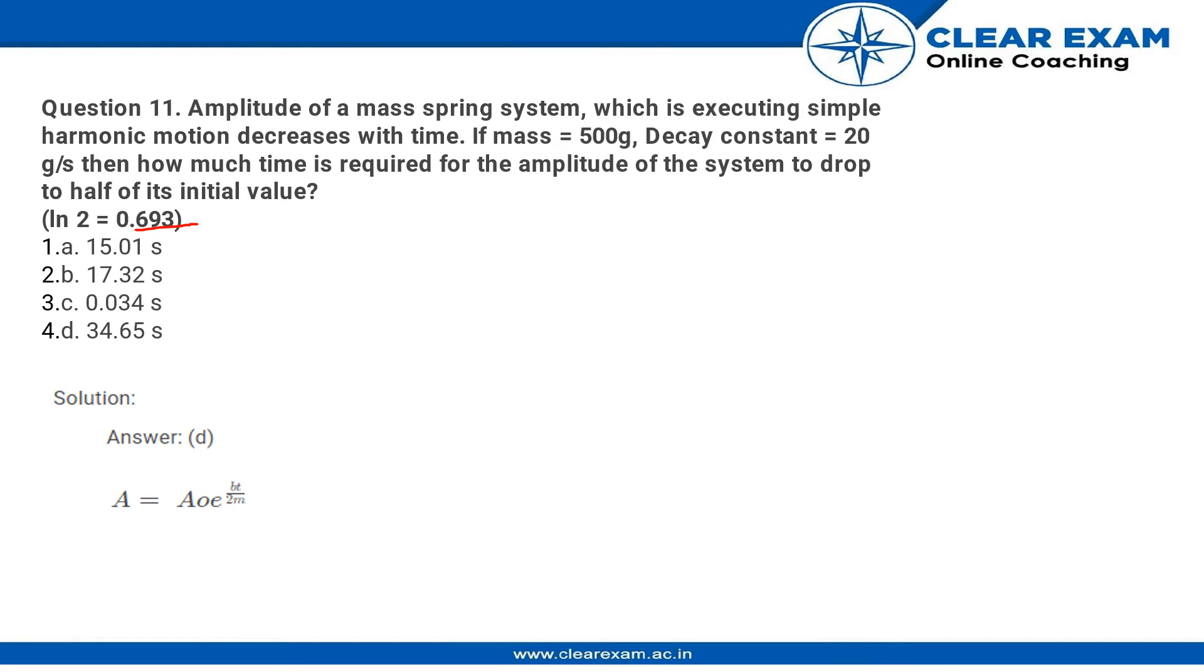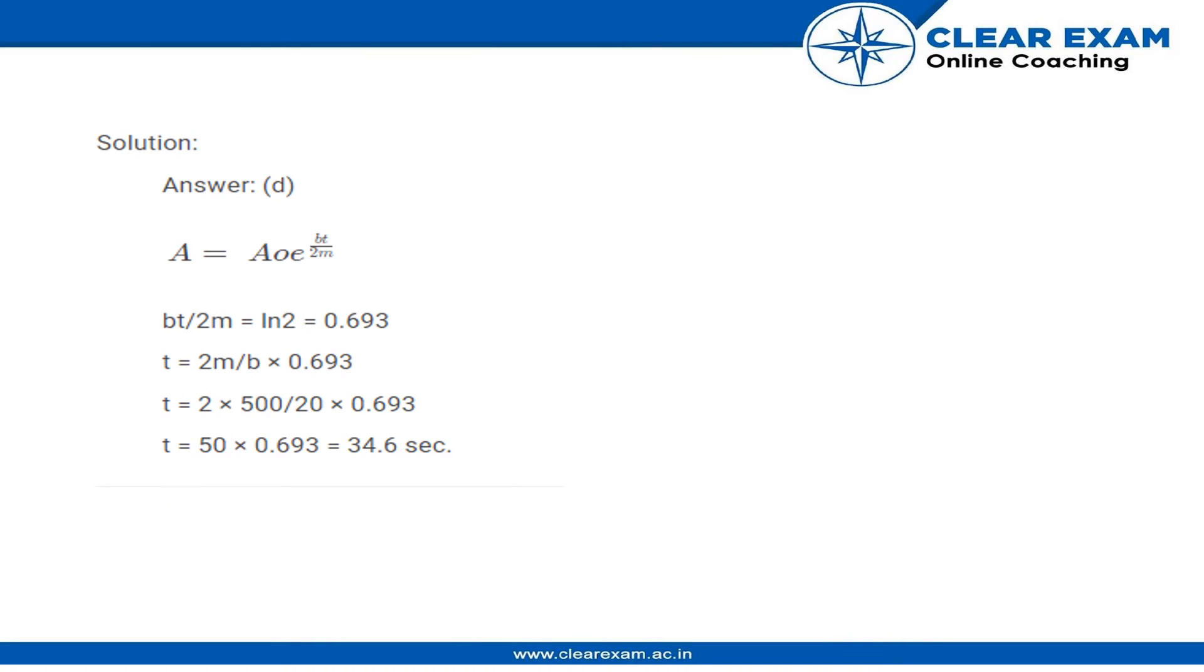So over here we are going to put in the values. What we do is we take ln on both sides, and ln of A/A₀ is ln of—as we know A is A₀/2—so ln(2) becomes ln(e^(-bt/2m)).